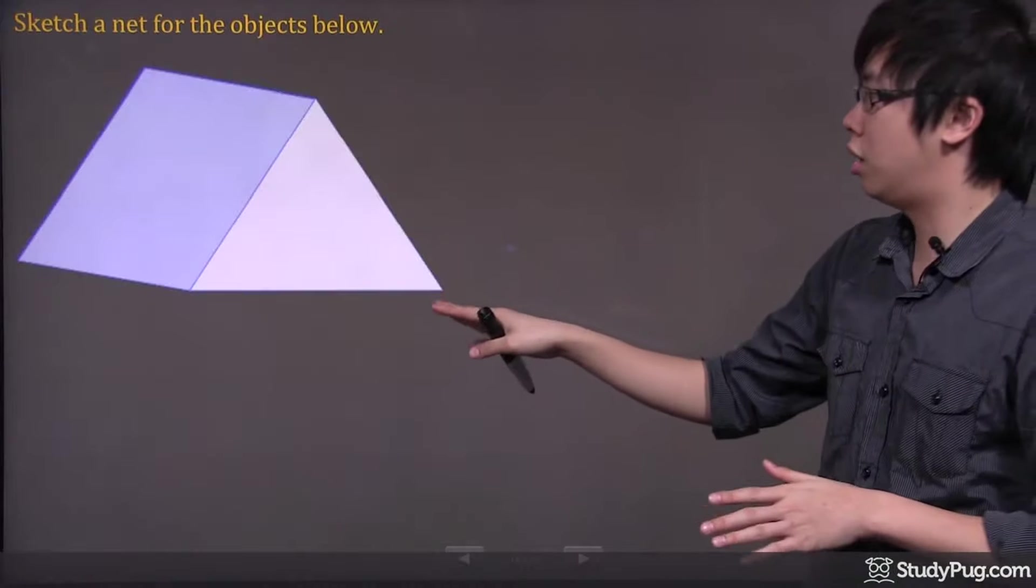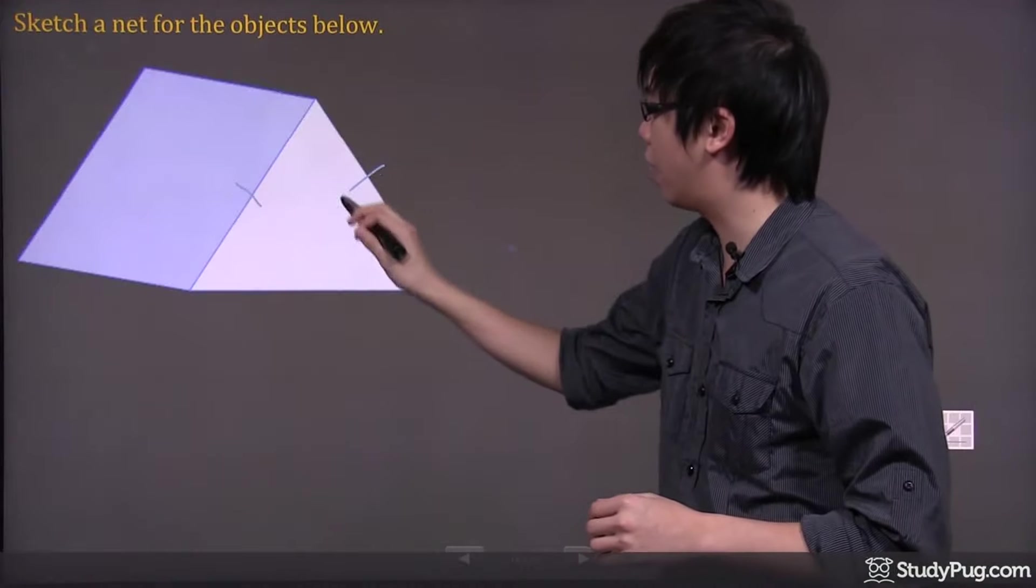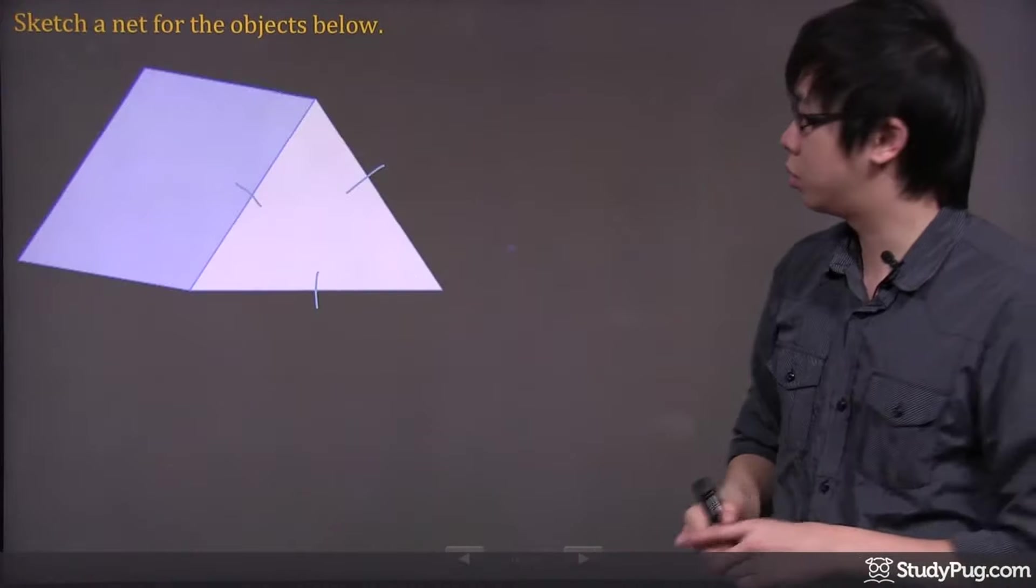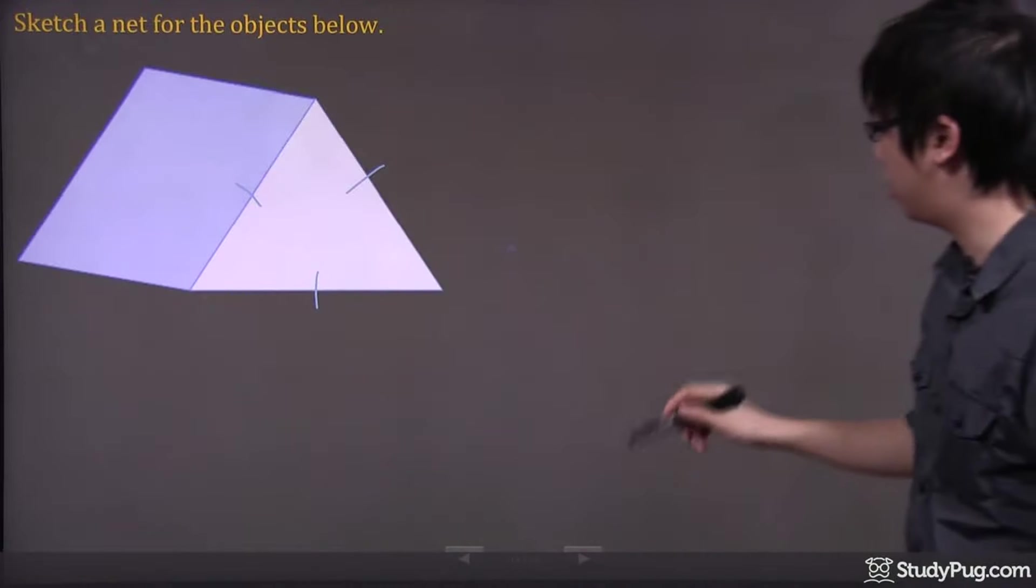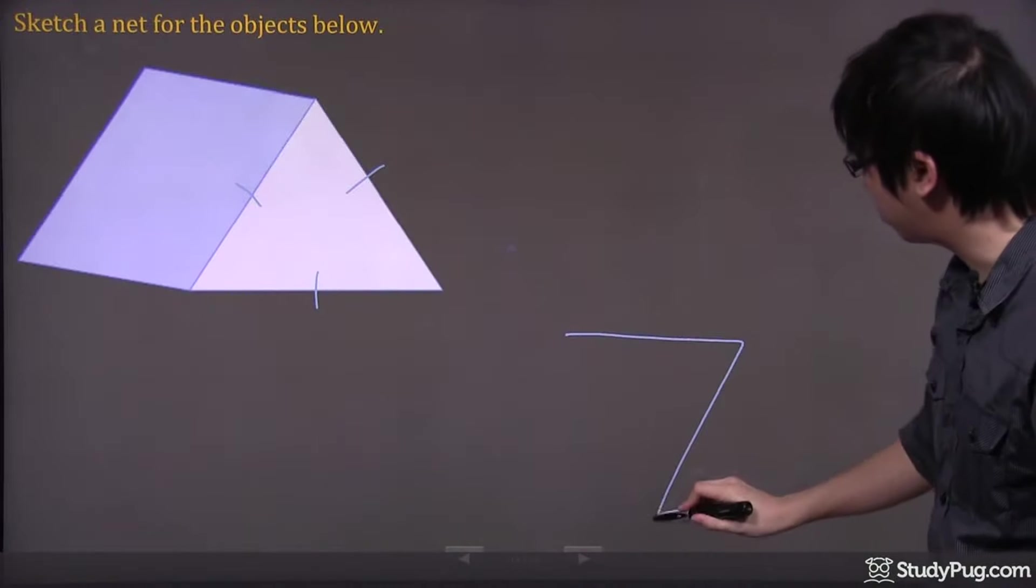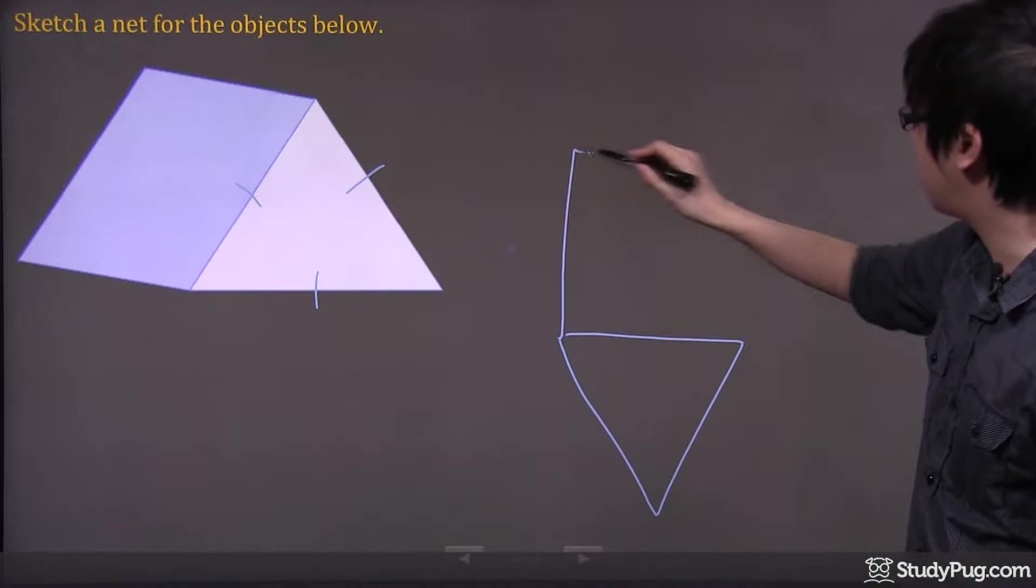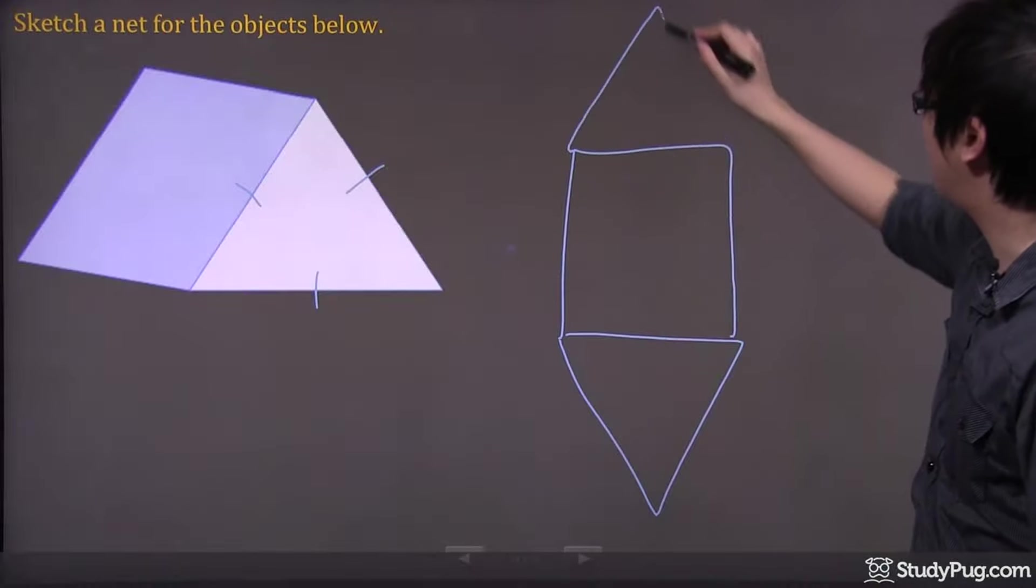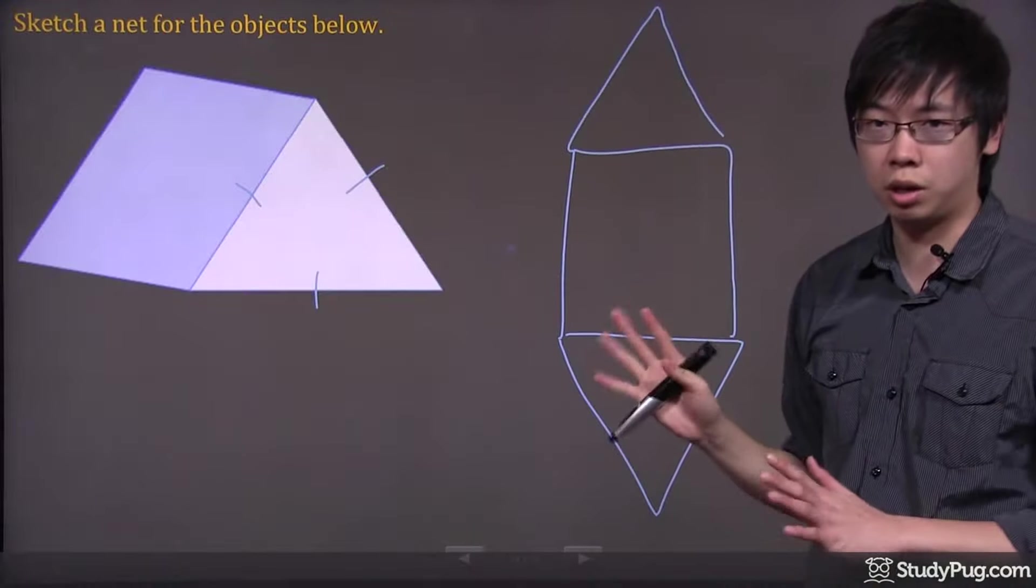So I'm going to pretend that this is actually an equilateral triangle. So there's one in the front and there's one in the back. So what happened is I'm going to draw one of them here. And there's a middle piece and there's another one over there. They're actually the same size. Sorry about my drawing.